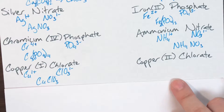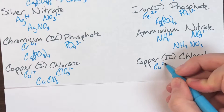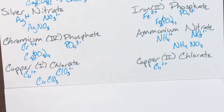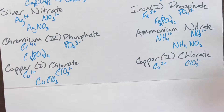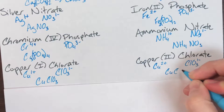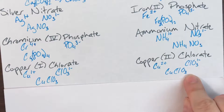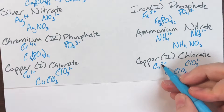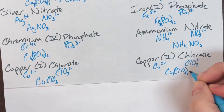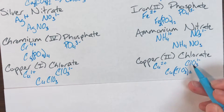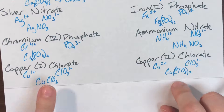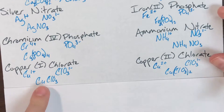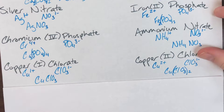Copper(II) chlorate differs from copper(I) chlorate. Copper(II) means Cu has a positive two oxidative state. Chlorate remains ClO₃⁻. Exchanging charges for subscripts: copper's 2 becomes chlorate's subscript, so I protect chlorate in parentheses and write that 2 outside, giving Cu(ClO₃)₂. The different oxidative states result in different compound formulas, so those oxidative states do matter.